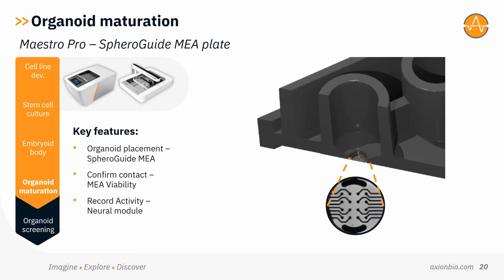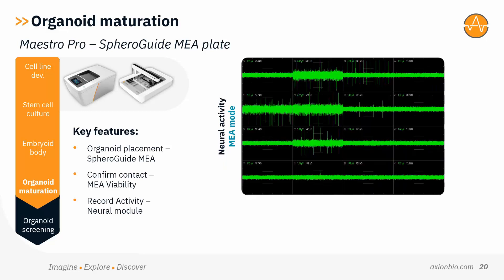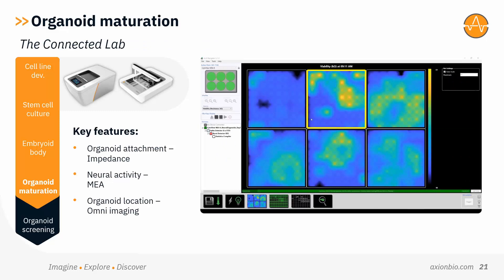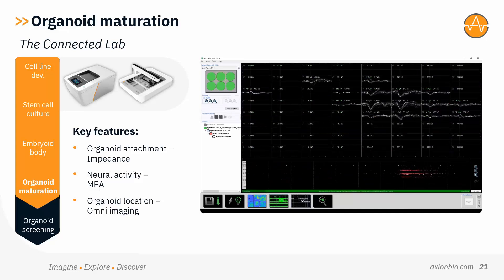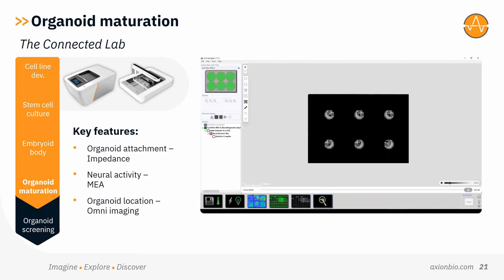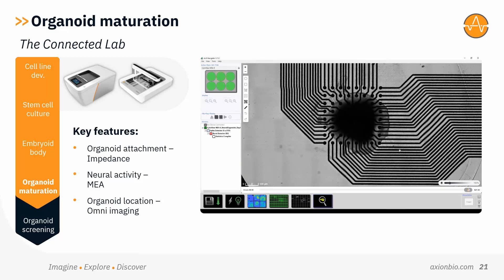To make neural organoid recordings on Maestro even easier, we've recently launched our new SpheroGuide MEA plate. The well design funnels the organoid over the recording electrodes, enabling faster and more consistent loading of the plate. We can confirm that the organoid is touching the electrodes using the impedance mode on the Maestro system, and then switch to the neural activity mode for electrical activity recordings. Here is a video showing how we can confirm, using impedance, that the organoid is touching the electrode array in the well. With the neural module, we can then detect the spontaneous electrical activity and complex burst firing patterns. As the Maestro MEA plates are transparent, when combined with our Omni imaging system, we can seamlessly multiplex imaging and functional data for the most complete understanding of your neural organoid.